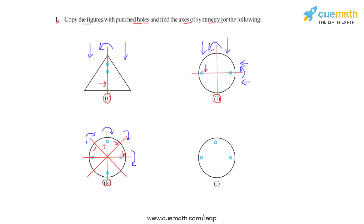Let us now move on to the last figure, figure L. Based on the position of the punched holes and the orientation of the figure, if we divide figure L into two equal halves using a vertical line and fold the figure about this line, both equal halves coincide, making this vertical line the axis of symmetry. This is how we find the axis of symmetry for different figures based on their symmetry and the position of the punched holes.